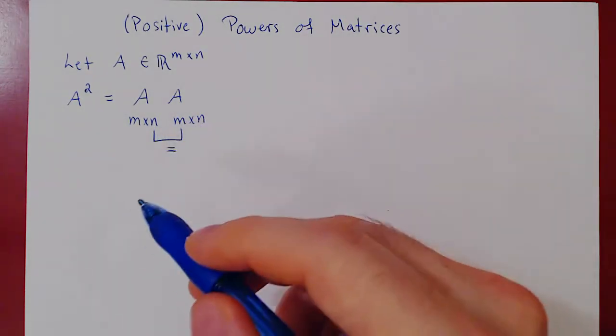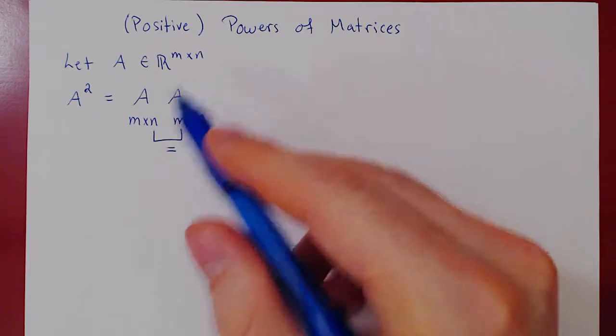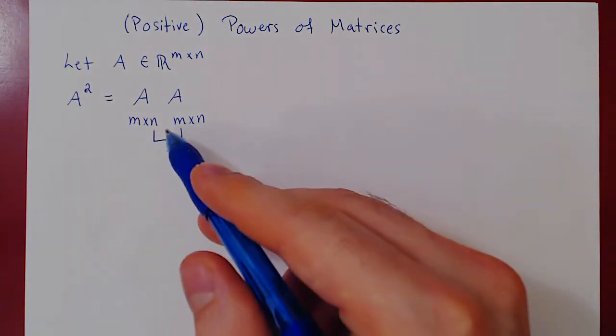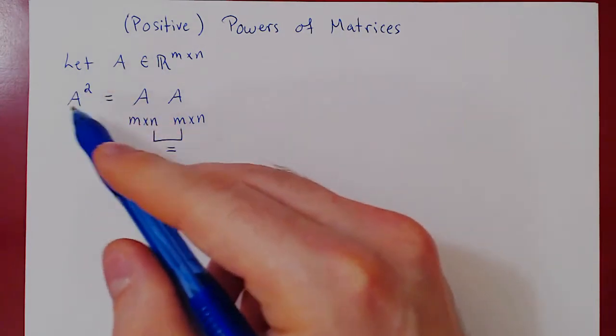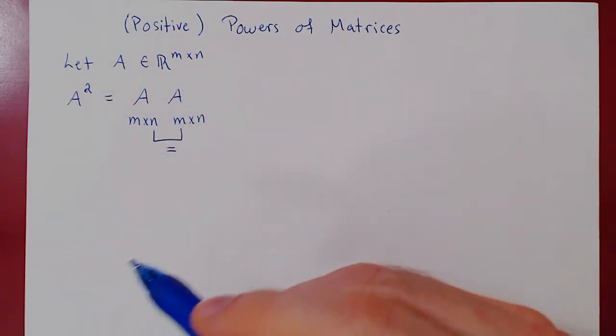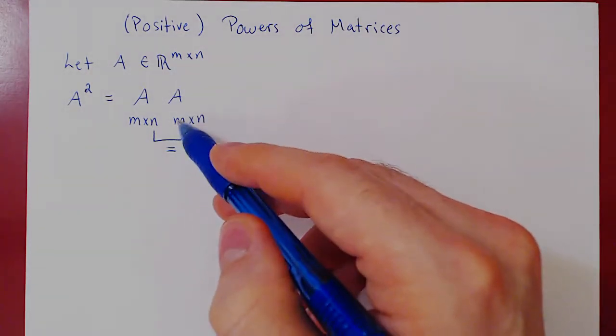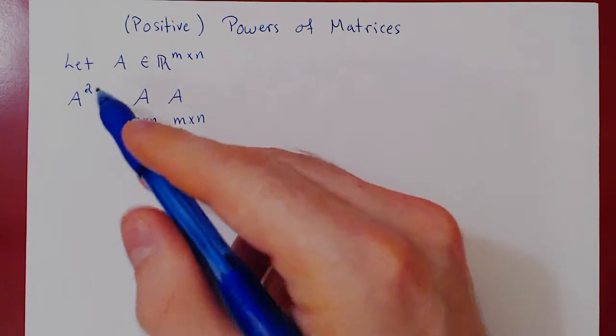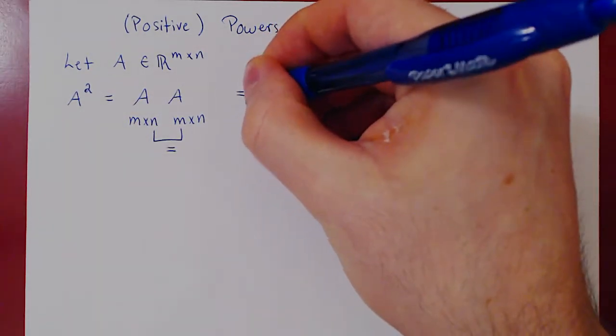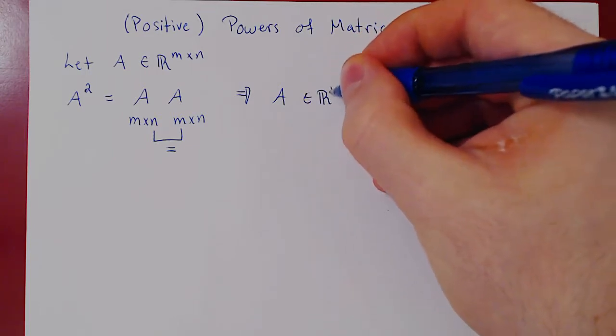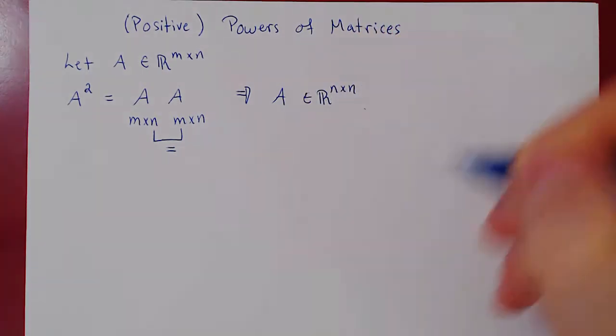If n is not equal to m, then the multiplication does not exist, and we cannot compute a squared. And so you see, the only way for a squared to exist is for n to equal m, and so to have the same number of rows as we have columns. So we can only take powers of square matrices. So a would have to be an n by n matrix.